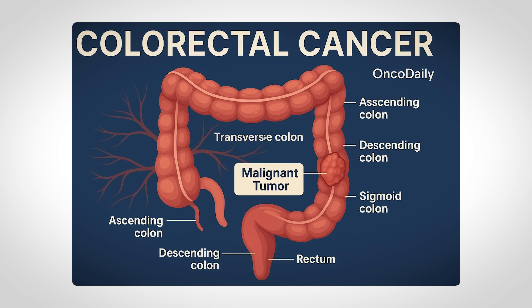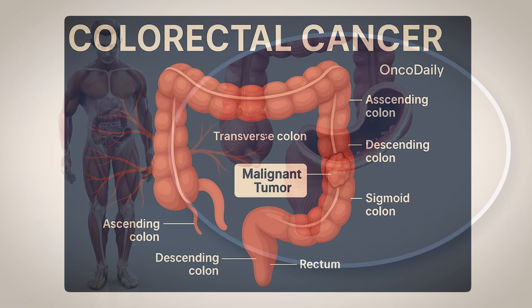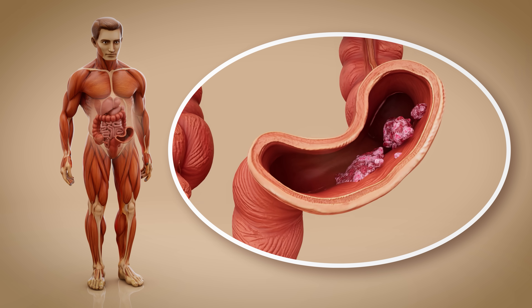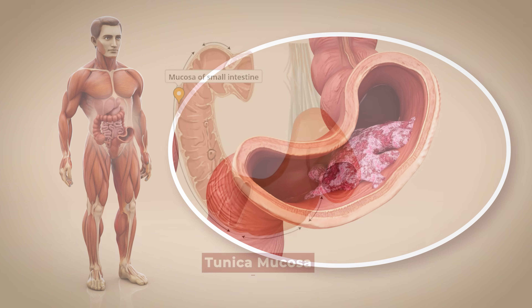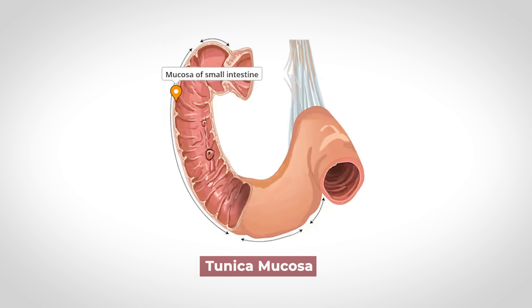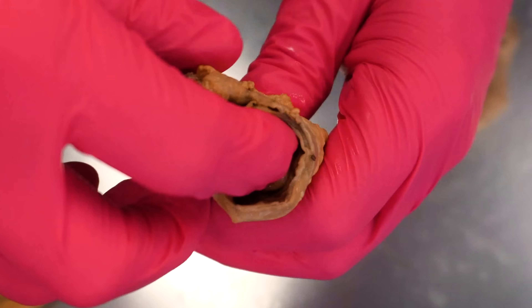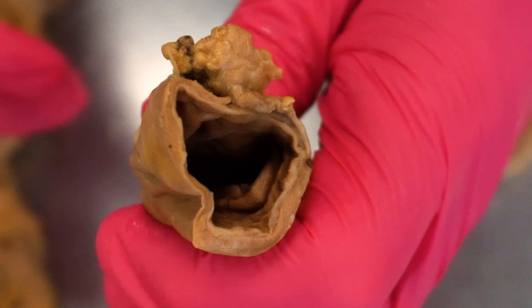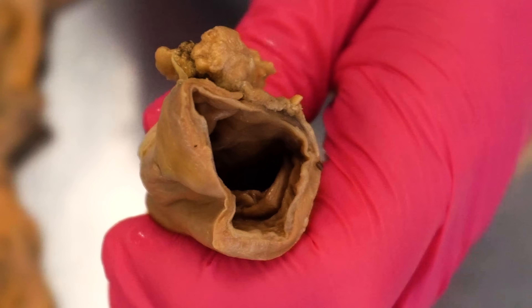Colon cancer — sometimes referred to as colorectal cancer when it also includes the rectum — usually starts with mutations in the cells that line the inside of the colon. The inside lining is referred to as the tunica mucosa, which you can see if we open it up. That inside lining, the tunica mucosa, is essentially where the cancer typically starts.